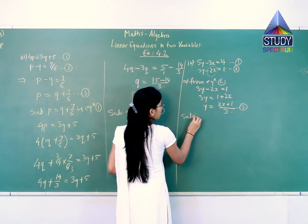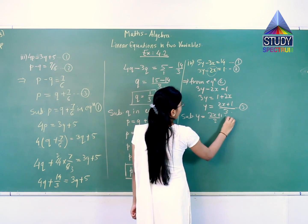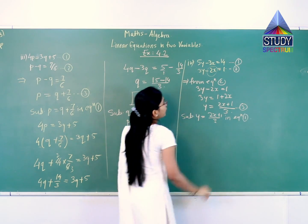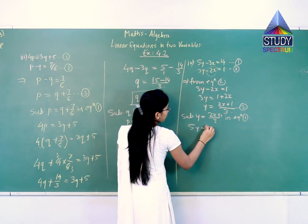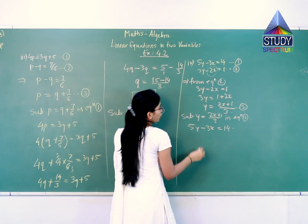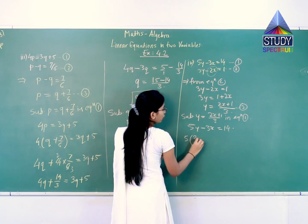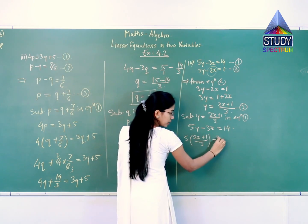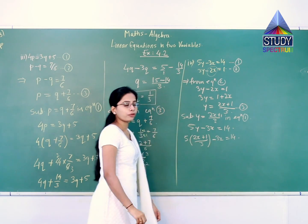Substituting y equals 2x plus 1 upon 3 in equation 1. Rewrite equation number 1: 5y minus 3x equals 14. So 5 — instead of y — times (2x plus 1 upon 3), minus 3x, is equal to 14.